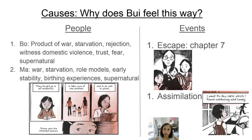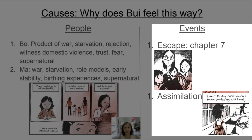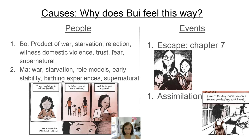In addition to the people who influence Thi's life, the events do as well. Pay close attention to chapter seven, the escape, and how escaping Vietnam followed by the assimilation to a new country are causes for the reasons that Thi may feel like an inadequate mother, unprepared to raise a child in the world.